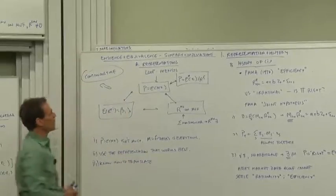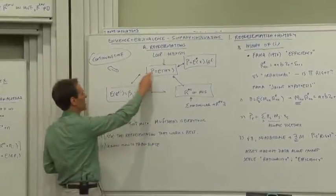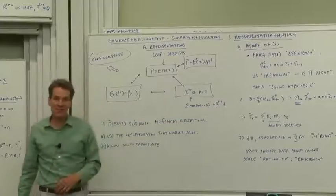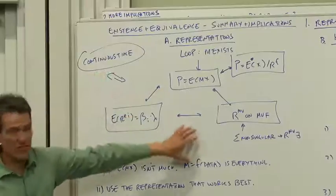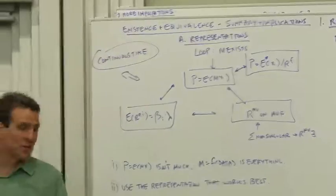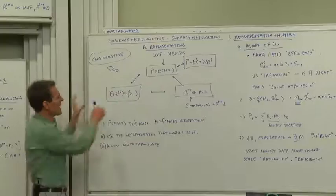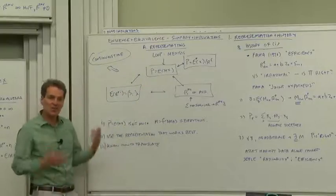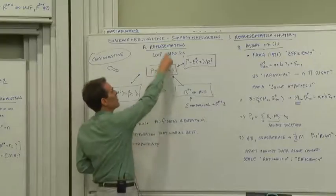Here's a schematic of what we've done. We've looked at asset pricing in different ways: prices equal expected discounted payoff, expected returns are linear and betas, or something's on the mean variance frontier. We've looked at continuous time representations or discrete time representations, and we translated discounted payoff into a set of risk neutral probabilities. You've learned how to go from each of these to the others. Given any of these representations, you know how to construct one of the other representations. You understand they're completely equivalent.